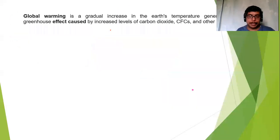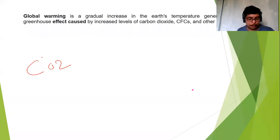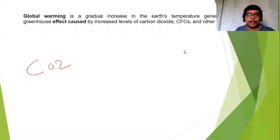CO2 is a greenhouse gas. What does it do? The sun's heat is absorbed by it, which warms the earth. The earth's temperature becomes warm. CO2, methane, and similar gases absorb this heat and warm the earth.